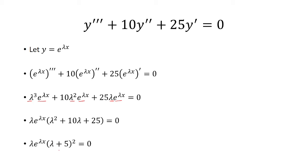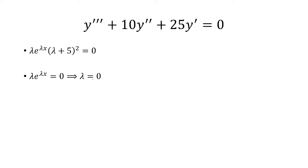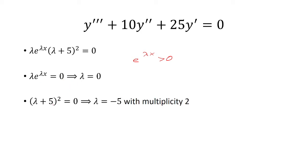Inside the parentheses will be lambda squared plus 10 times lambda plus 25. That gets factored into lambda plus 5 quantity squared. We can set each of these terms equal to zero. Since e to lambda x is always greater than zero, we can divide both sides by e to lambda x to get lambda equals zero. Setting lambda plus 5 quantity squared equal to zero gives lambda equals negative 5, with multiplicity 2 because of the exponent.